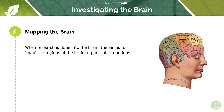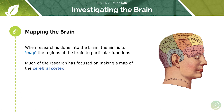Now let's look at how we investigate the brain. It's really useful to understand which regions of the brain are responsible for particular functions, especially in patients who may have certain types of brain damage or trauma. We can map regions of the brain and match them to particular functions — a map of the cerebral cortex has indeed been made, so we know exactly where each area controlling specific functions is located.